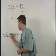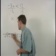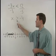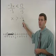Next, we draw an arrow going to the right on our number line to represent all numbers greater than negative 4.